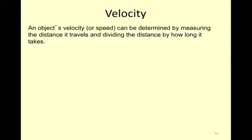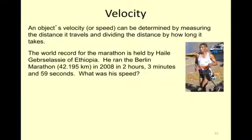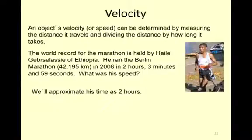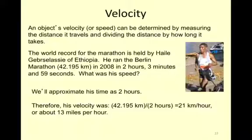Velocity and speed. Now let's determine the velocity of the marathoner Haile Gebrselassie — I always screw up his name, and I apologize. He ran approximately 42 kilometers in two hours, so he went 21 kilometers per hour, or about 13 miles per hour. Take 21 divided by 2, that's 10.5, add 2.1, you get about 13 miles per hour.